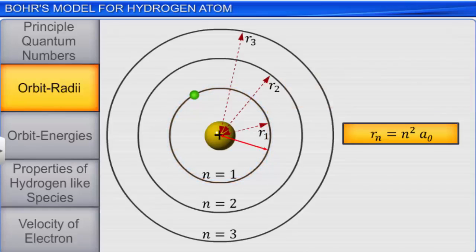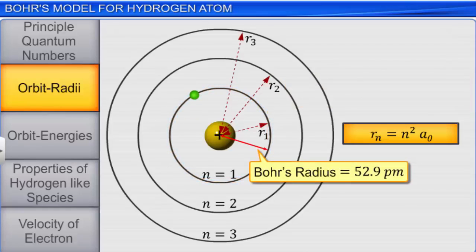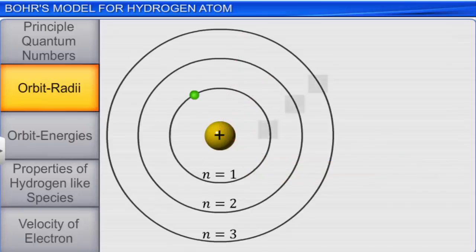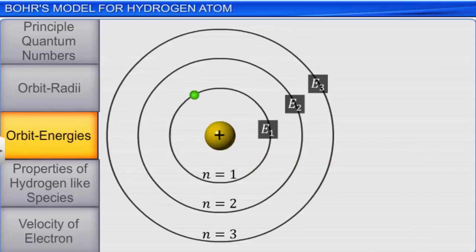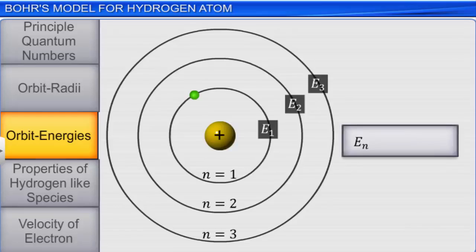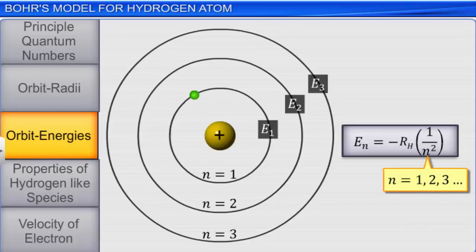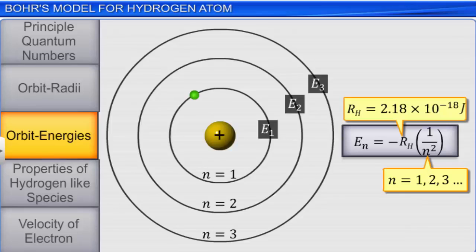This means that the smallest possible value of r, or the radius of the very first orbit where the sole electron of the hydrogen atom is found in its ground state, is equal to 52.9 picometers. This radius is called Bohr's radius. The energy of a stationary state or orbit is given by the equation: energy of the nth orbit, E_n, equals minus R_H multiplied by 1 divided by n squared, where n is the principal quantum number and R_H is Rydberg's constant, whose value is 2.18 × 10⁻¹⁸ joules.